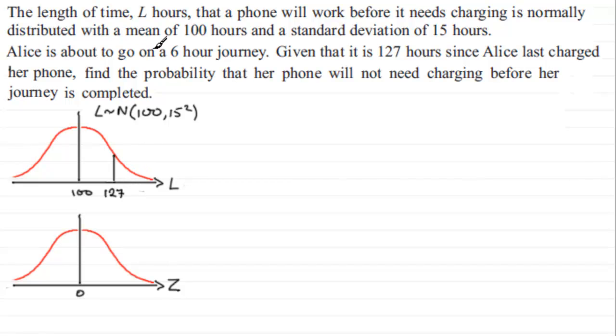Then if Alice is about to go on a six hour journey, if we add six hours to that, that's going to bring us up to 133 hours. So if we put a marker there at 133 hours, then we've got to find the probability that her phone will not need charging before her journey is completed. So what we've got to do essentially is compare the probability of being more than 133 with the probability of being more than 127.